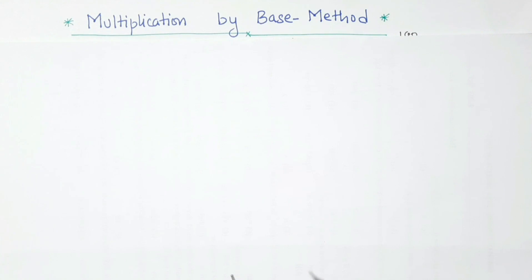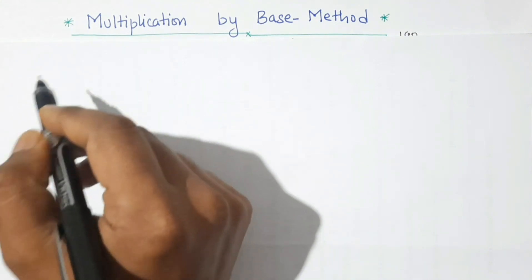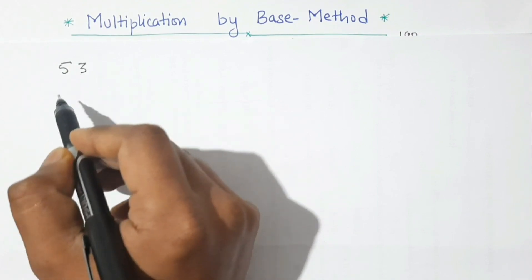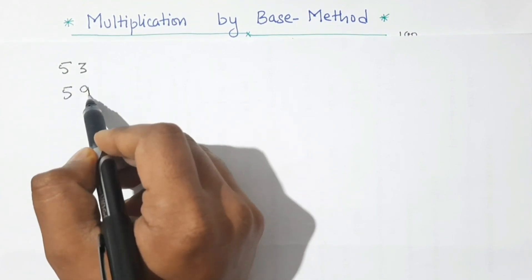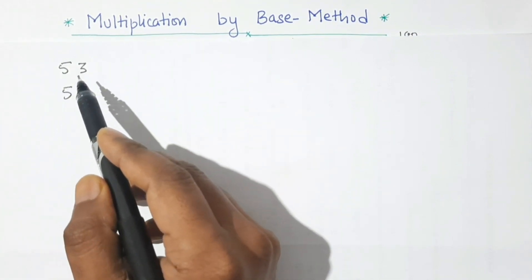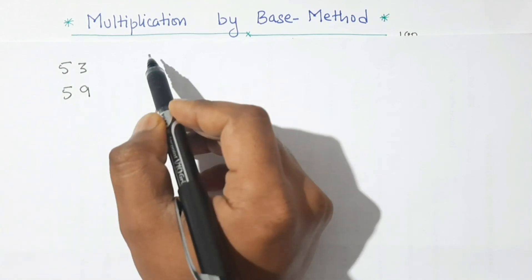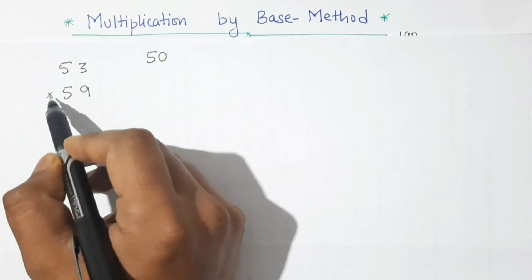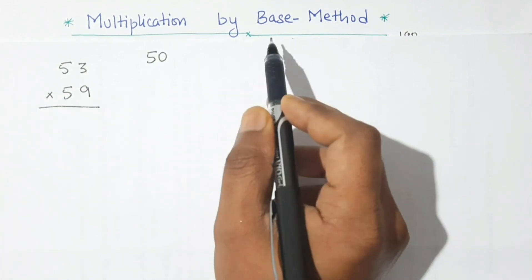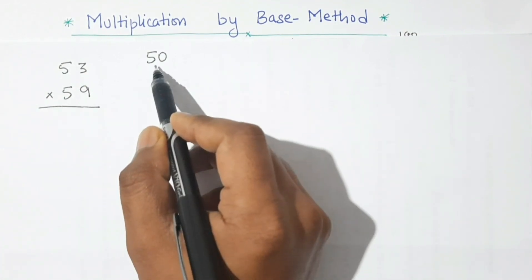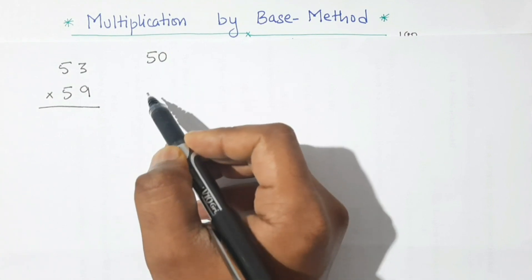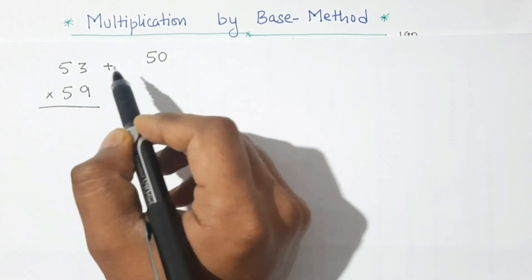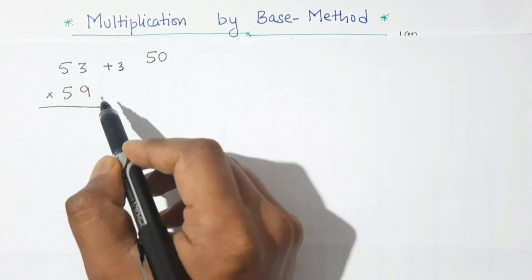Let us start with a smaller number. I will take 53 and 59. Both numbers are closer to 50, so our base is 50. We are multiplying by the base method, so first we see that 53 is 3 more than 50 (plus 3) and 59 is 9 more than 50 (plus 9).